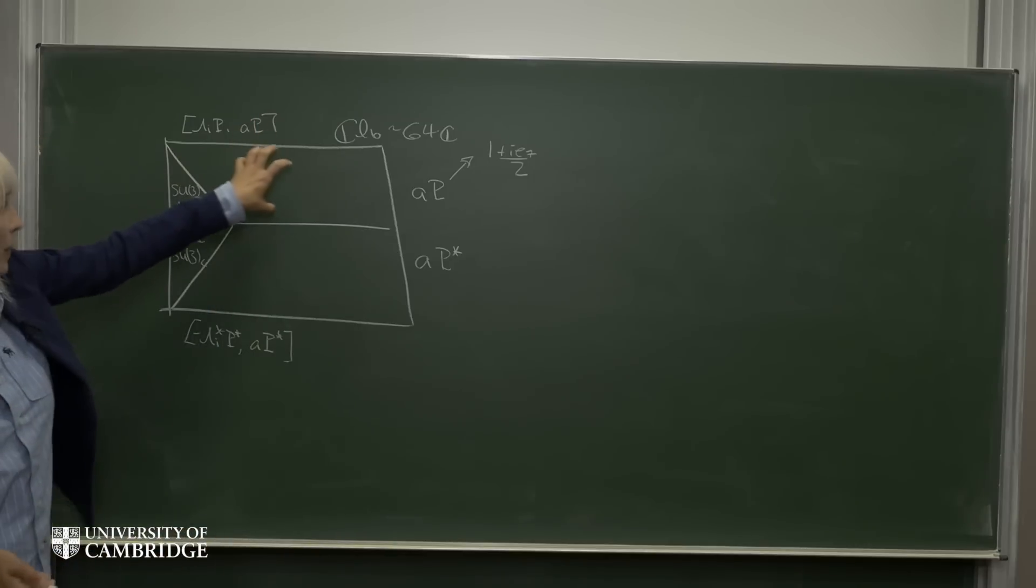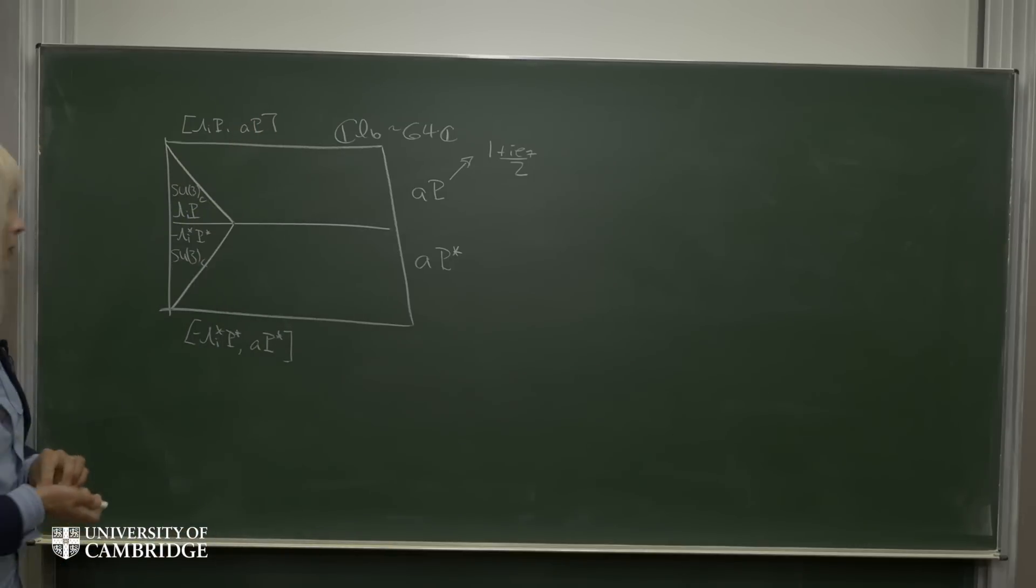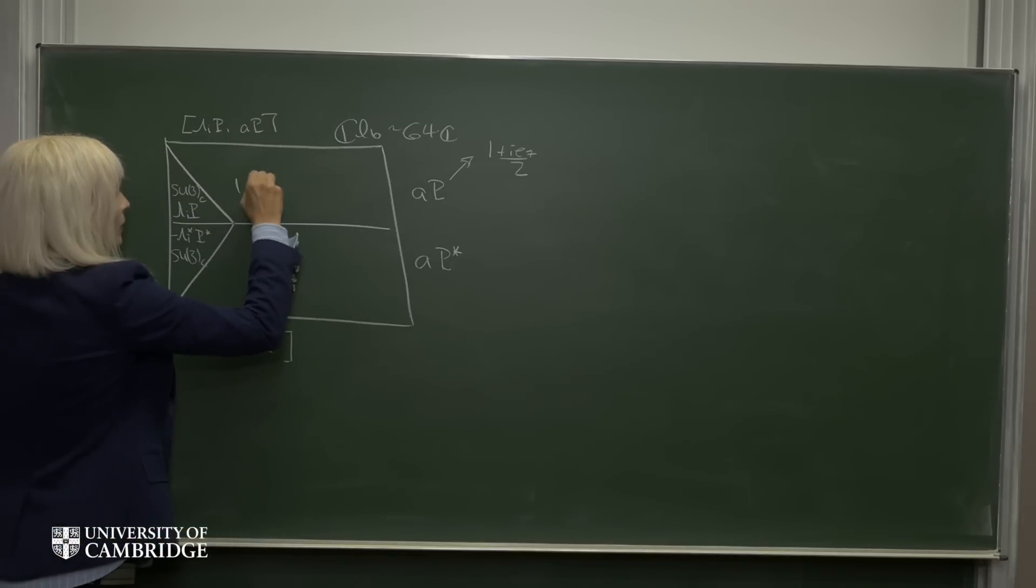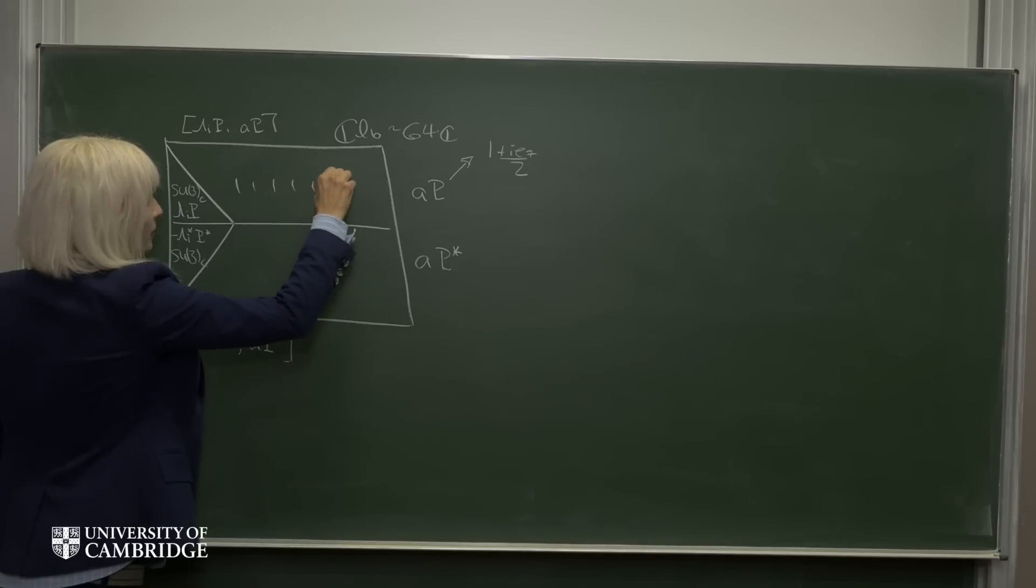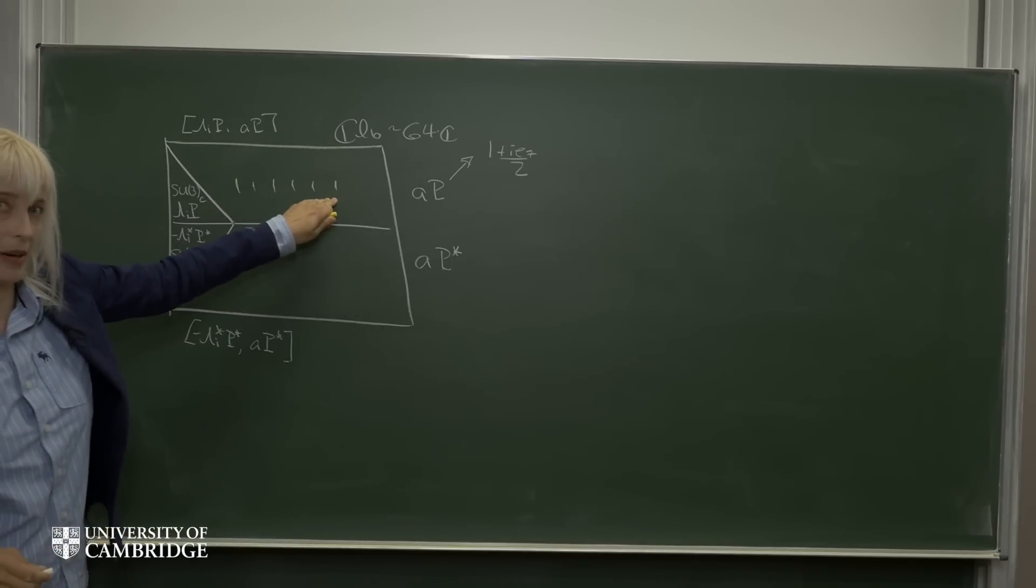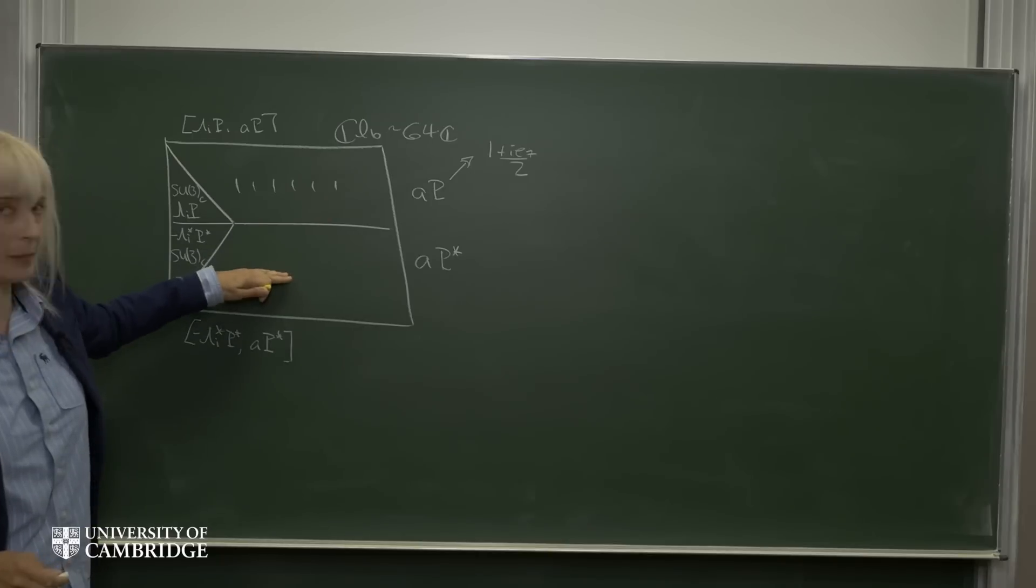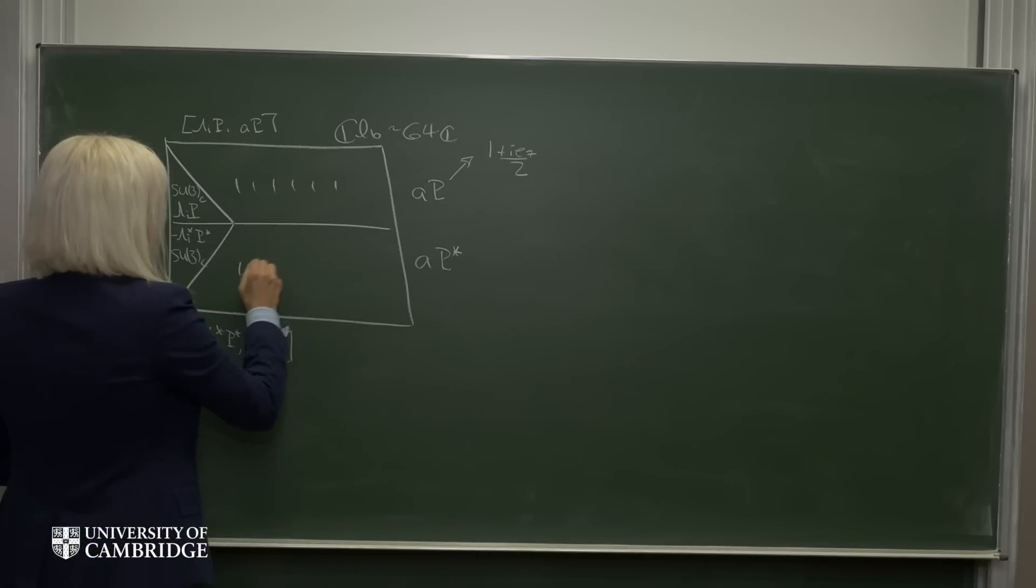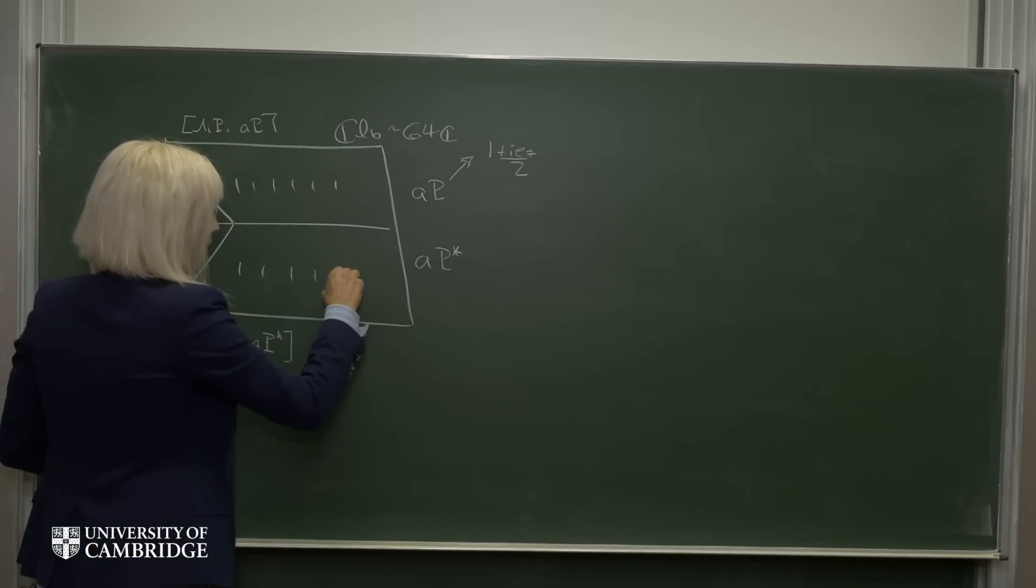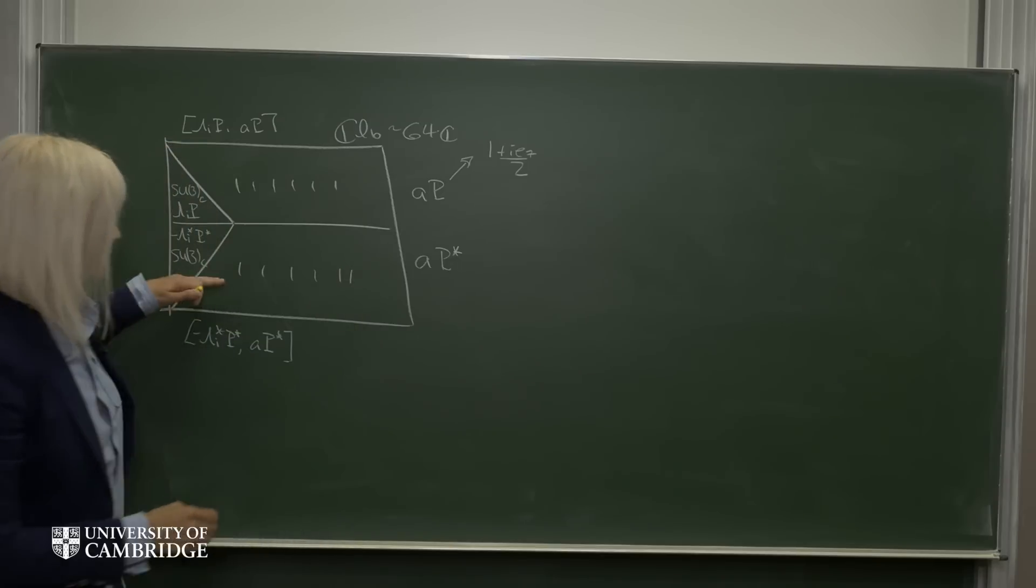we find that the top half space breaks down as 1, 2, 3, 4, 5, 6. We find 6 singlets under SU3. And in the bottom half space, we have 1, 2, 3, 4, 5, 6 singlets in the bottom half space.